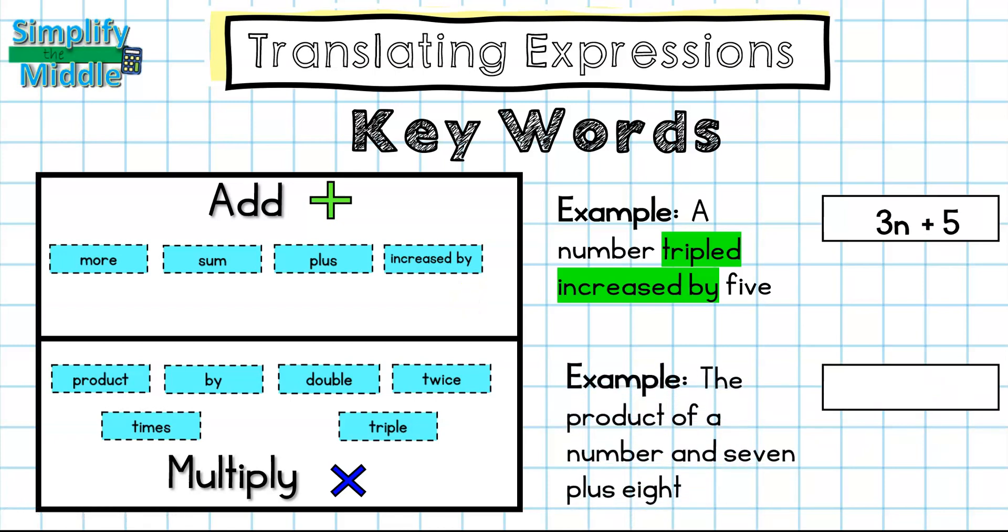Let's try another one. This time I have the product of a number and seven plus eight. So I see the word product, which is the answer for a multiplication problem. Because I have the word and here, this tells me that I'm doing multiplication. So multiplication of a variable and seven. Once again, we have a number and a variable. So I'm going to put the seven in front of that variable. So 7n. And then I'm going to do the operation plus eight. So plus is add. So I'll just add eight onto the end.